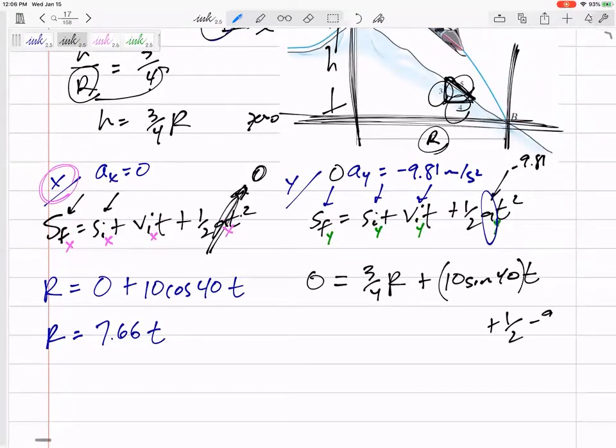All right. Then now here, negative 9.81 T squared. Negative 9.81 T squared.